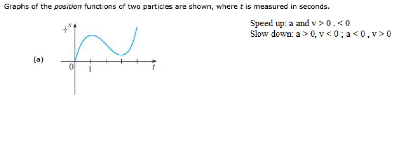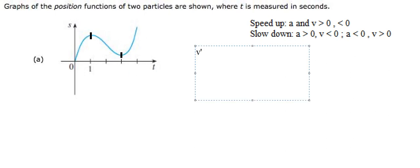We have the position function here. We have two critical points. Let's look at the S function here — that is the position function. You can see that it goes up, then this one goes down, and then they go up again. So we need to know that the first derivative of S is the velocity function.